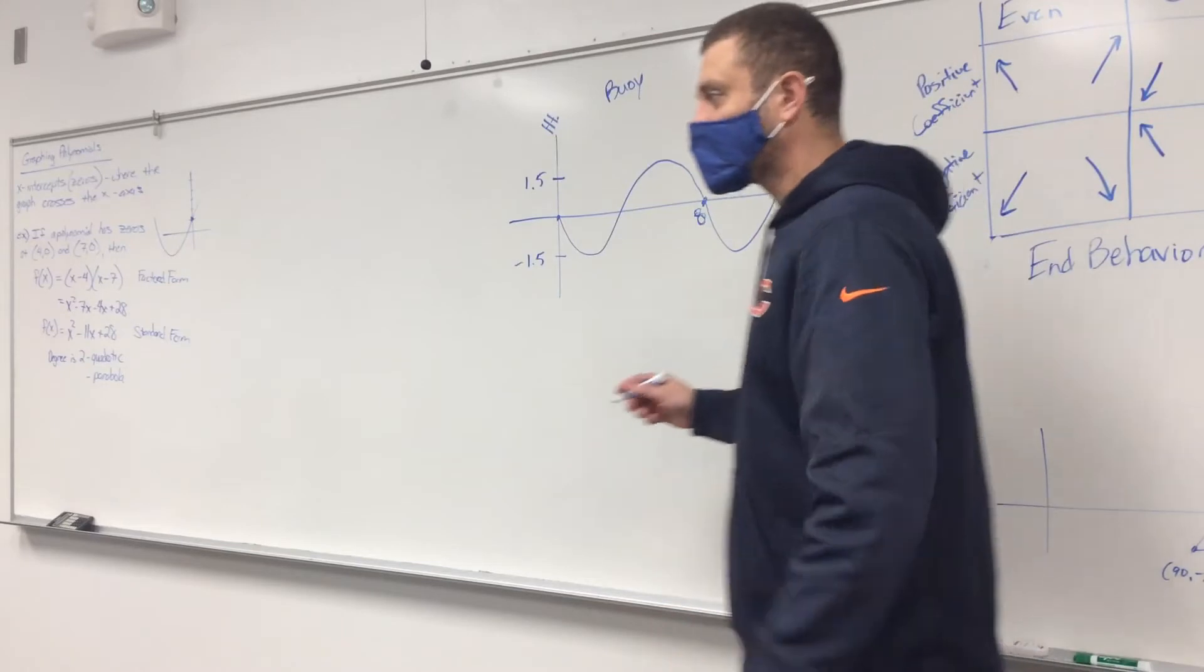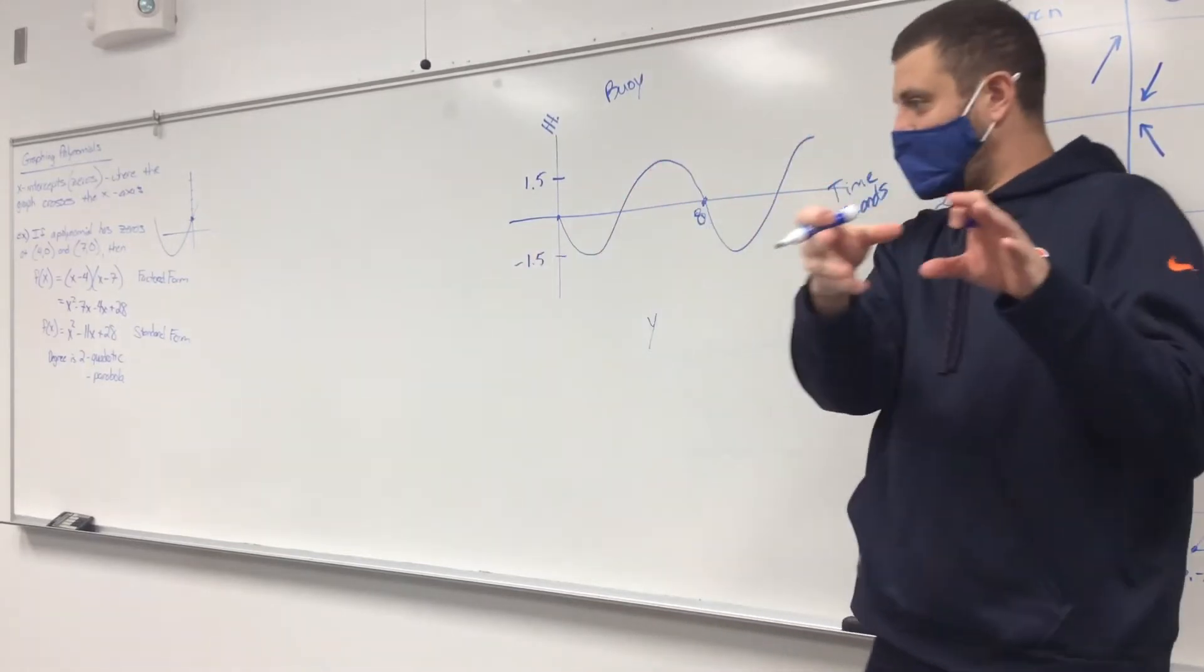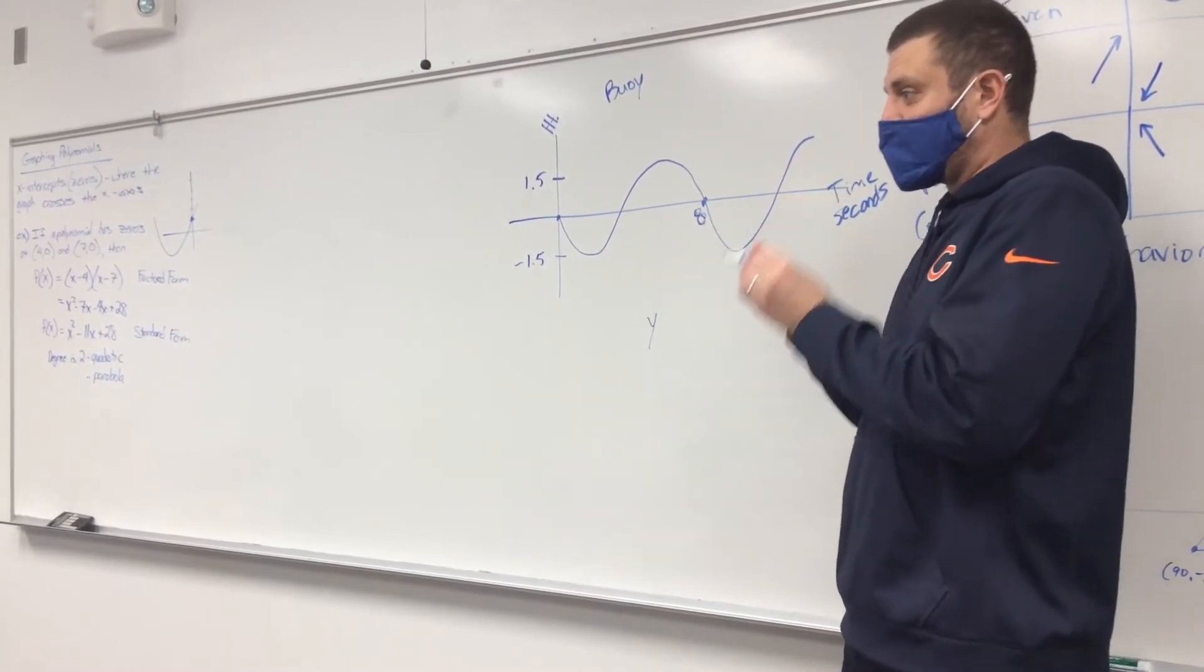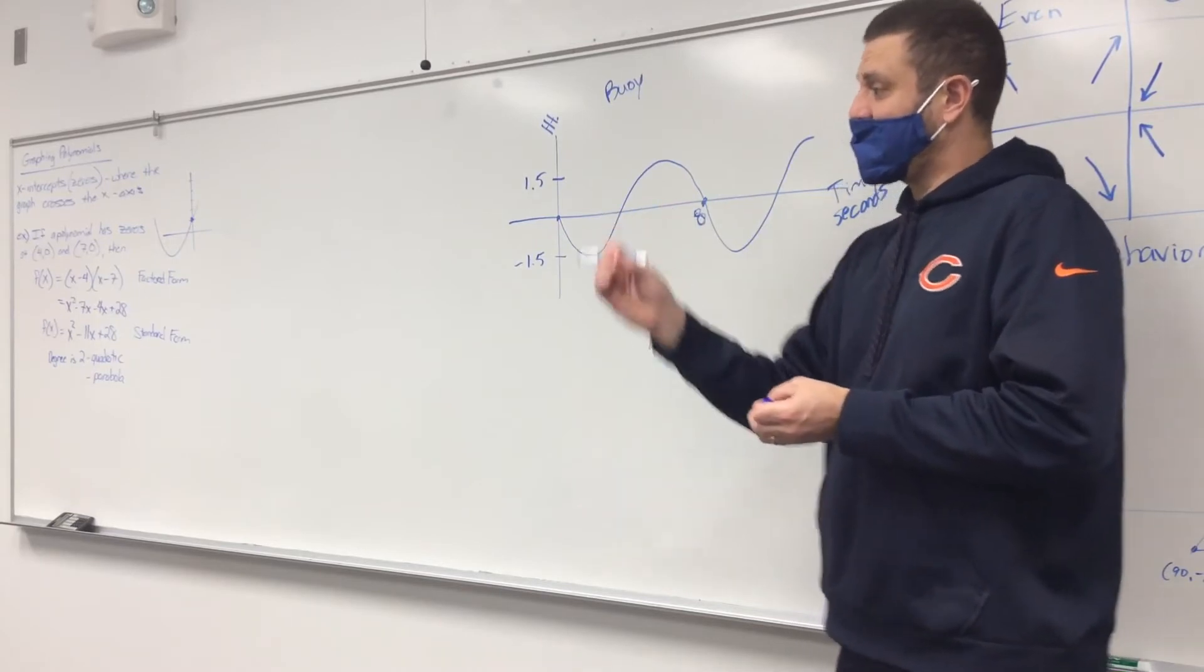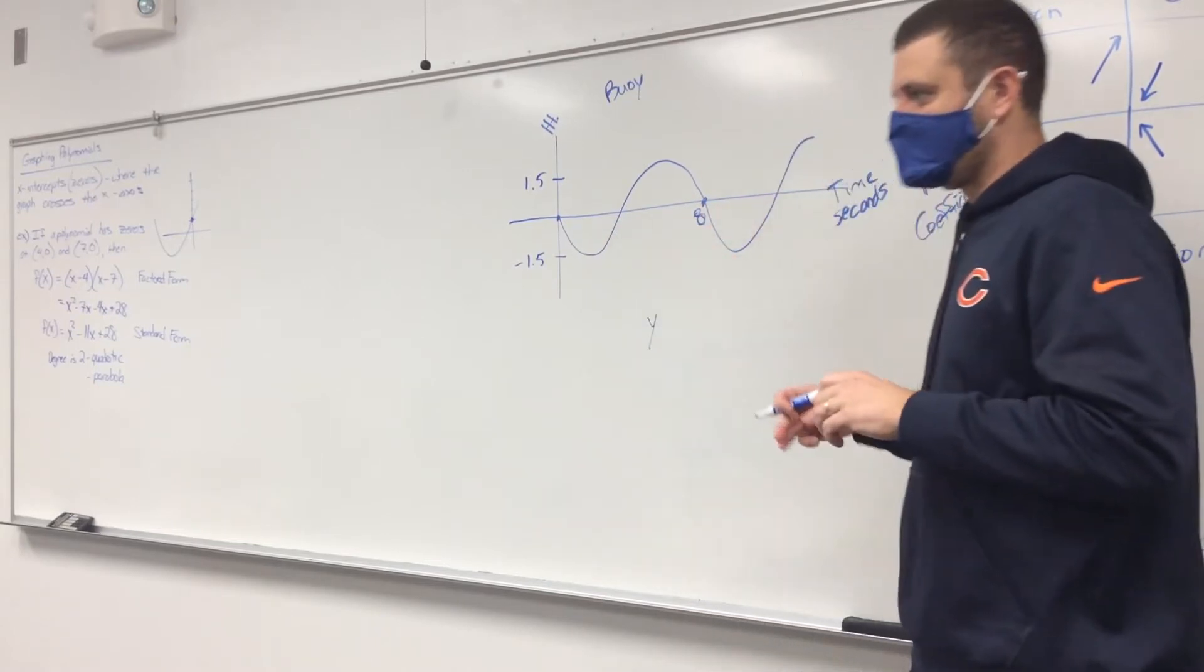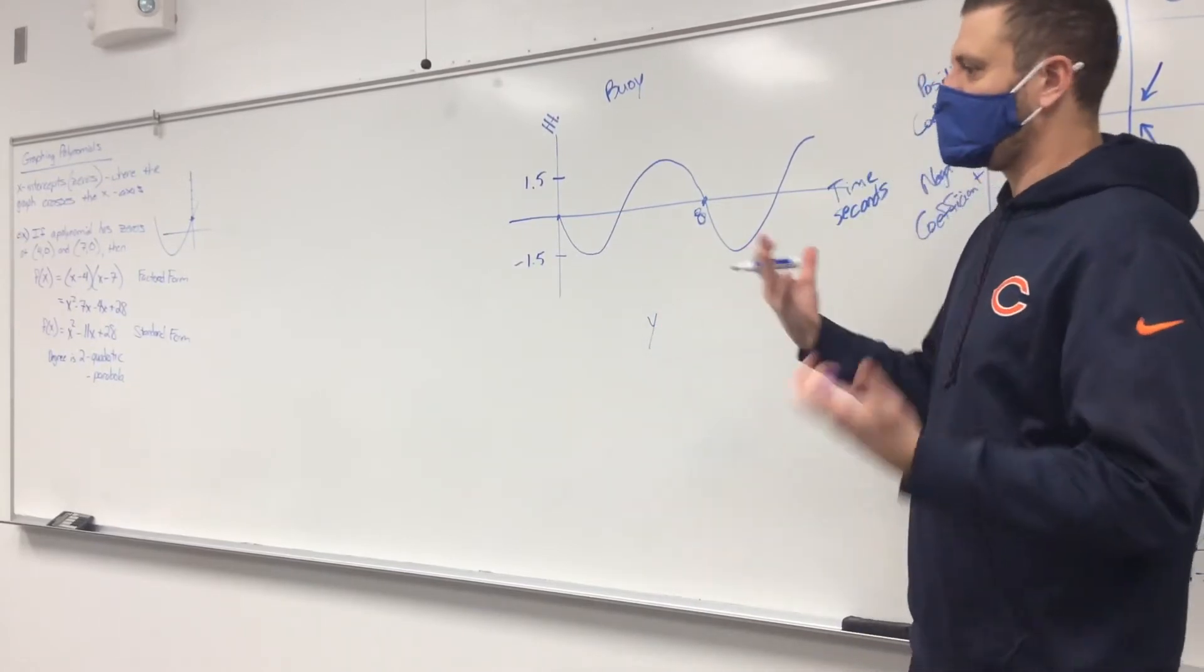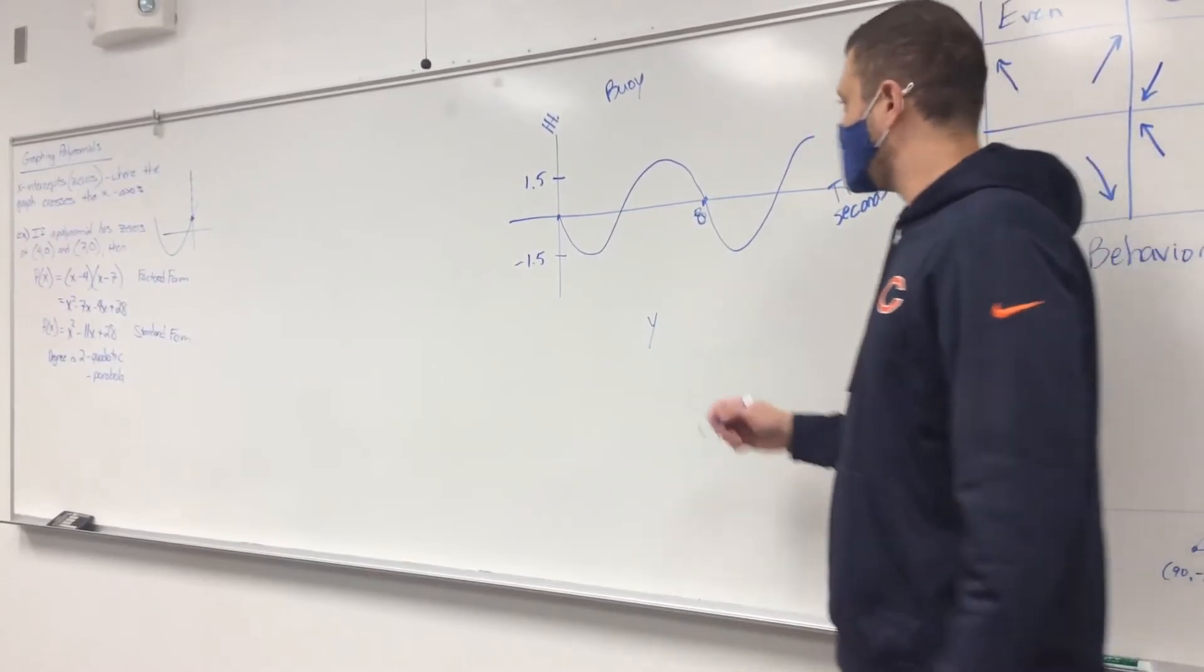How do we know that it starts at zero? You're told in the problem that I had up on the screen before. It said in the problem, assume the buoy is at its equilibrium point, headed down when T equals zero. So it had to tell us that. It'll have to tell you that. Because yes, if you don't know where it's starting, then you don't really know whether to use sine or cosine. Does that make sense? It told us that.